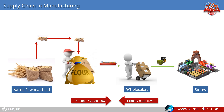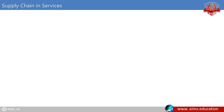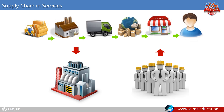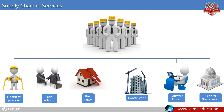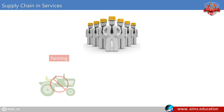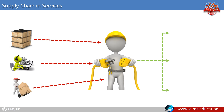Initially the supply chain model was developed for manufacturing, but the service industry has supply chains too. A few examples of service industries are electricity providers, legal advisors, real estate, construction, software houses, and even the federal government. In its broadest sense, service industries include all organizations except farming, mining, and manufacturing. An electric utility receives products, services, and supplies, and dispenses its services to home customers, commercial customers, and other utilities.